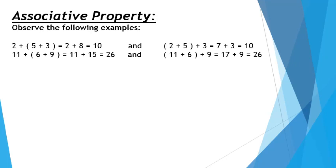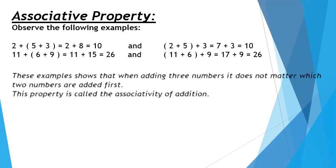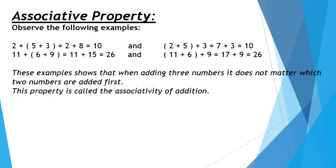Now let's see one more example: 11 plus 6 plus 9. Here I have first made a group of 6 and 9, and then the sum I am adding to 11, which is 26. Now in the other calculation, I have made the group of 11 and 6 first, and then the sum I am adding to 9. Then also we are getting the same answer.